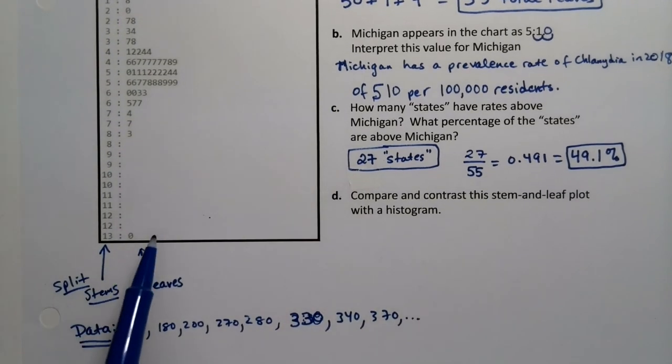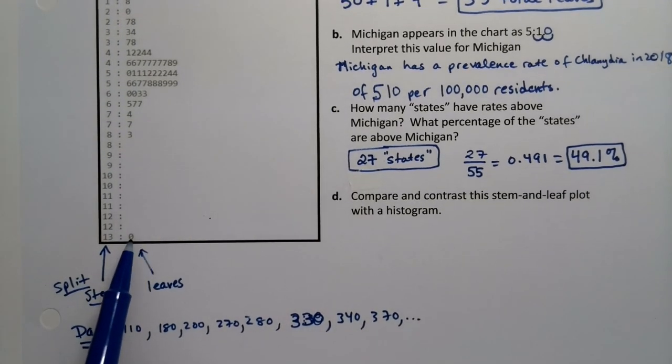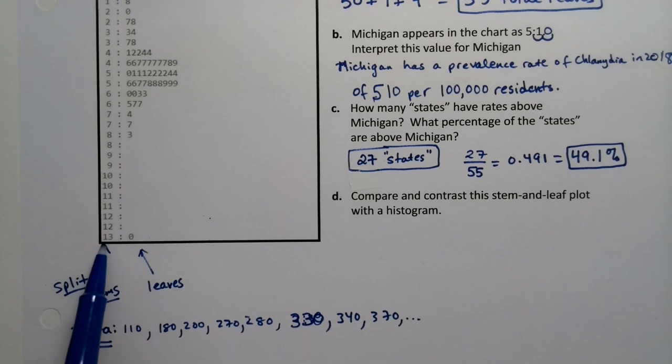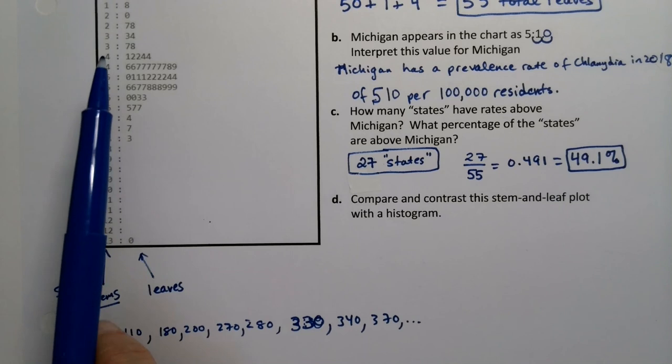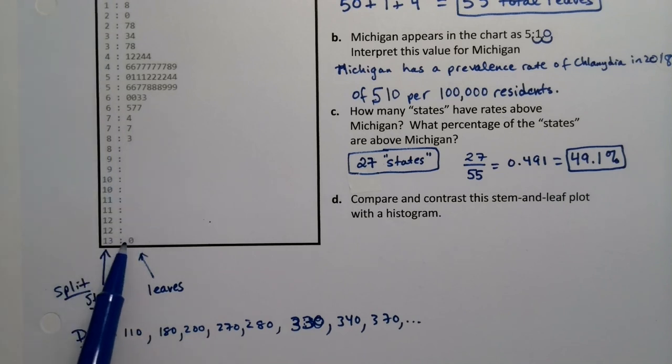In case you're wondering, by the way, that's not a state, right? That's the Washington DC area, which makes sense because sexually transmitted infections like that are more prevalent in urban areas. Since that's the one that's really a city rather than a state, it's going to have a super high prevalence rate. If you pick large cities, then the large cities are actually going to be all around here. But because we're actually doing states and then DC, that's where DC falls.